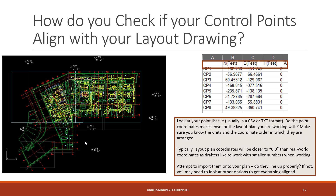So how can you check if your control points actually align with your layout drawing? If you're given control points from the surveyor or GC, what's a quick way to check if they'll align to your layout plan? There is a chance it could line up — maybe they gave you the correct points. One thing you can do is simply import them and see if they line up to where control points typically should be, which are usually on the outskirts of the job.